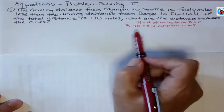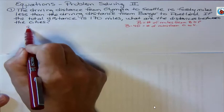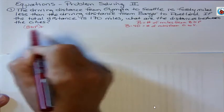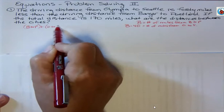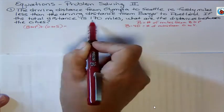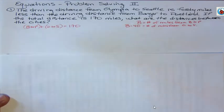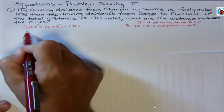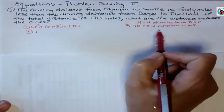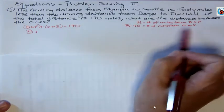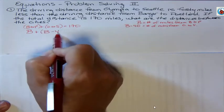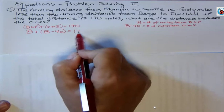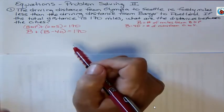The total of the two trips, that is Bangor to Portland plus Olympia to Seattle, those total are 170 miles. So instead of Bangor to Portland, we call that just B. And instead of Olympia to Seattle, we call that B minus 40. I don't really need the parentheses there, but just to show you that was the other expression. And now I'm going to solve that.